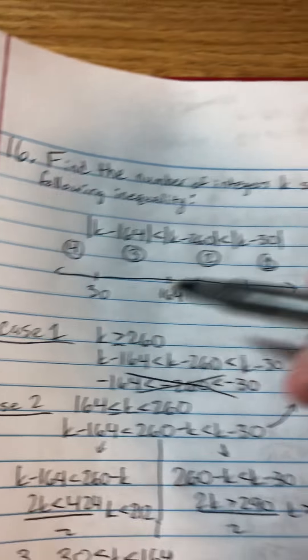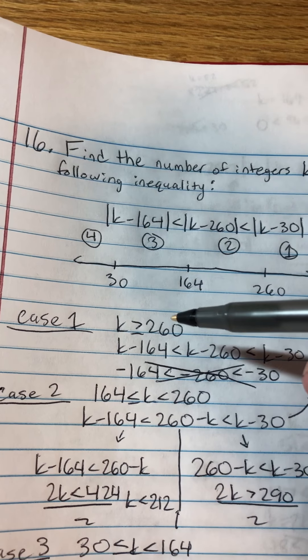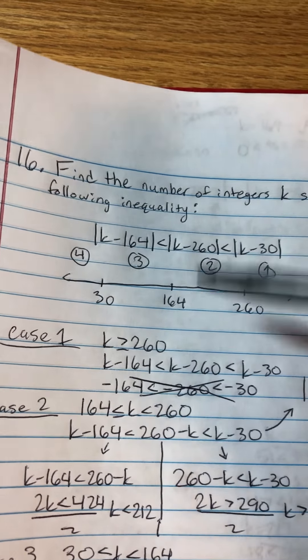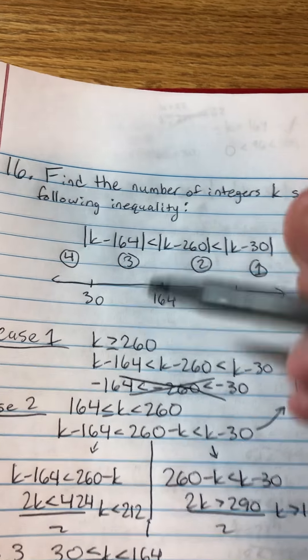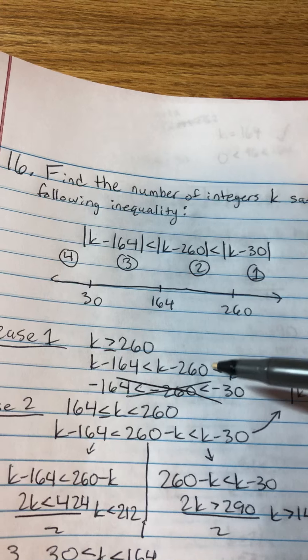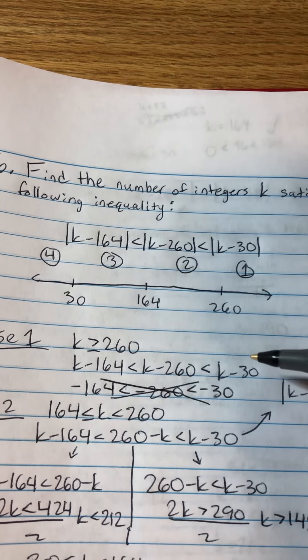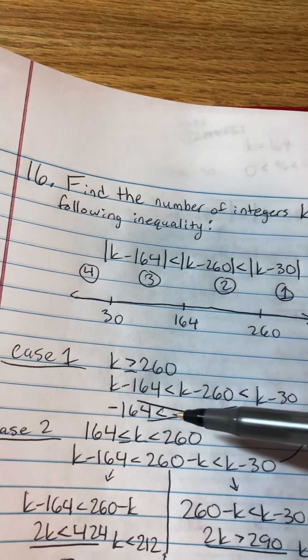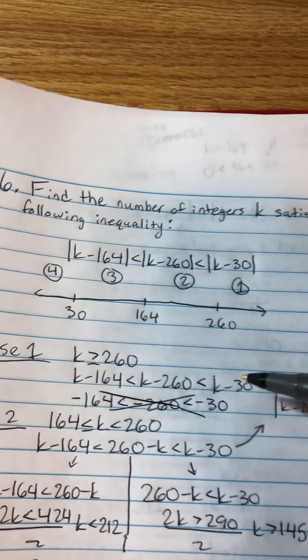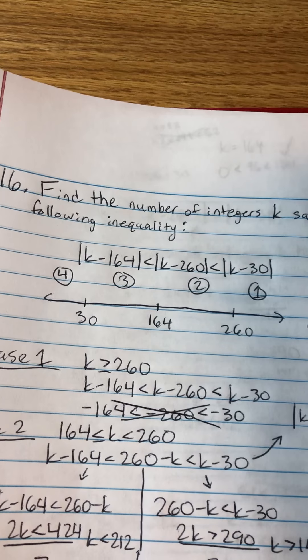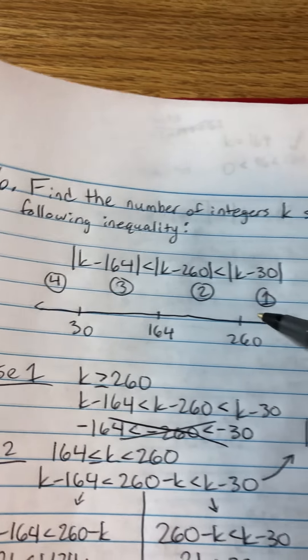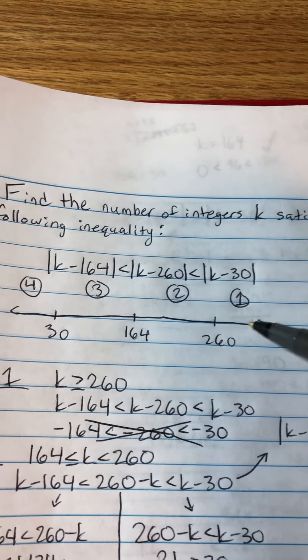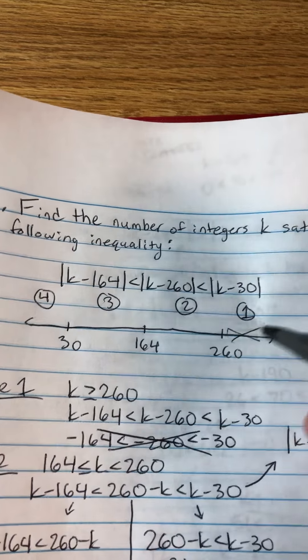The first case is when k is greater than or equal to 260. And so it ended up being k minus 164 is less than k minus 260, which is less than k minus 30. And it ends up being negative 164 is less than negative 260, which is less than 30, which doesn't make sense. So case 1 doesn't work. There's no integer k that can satisfy that.